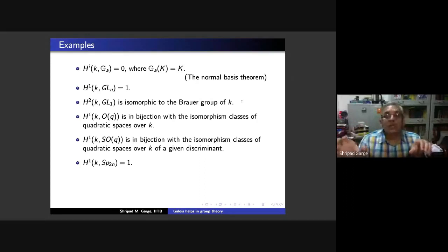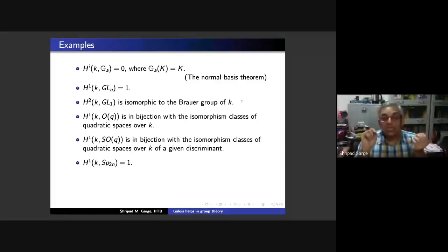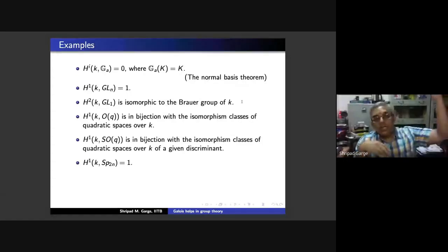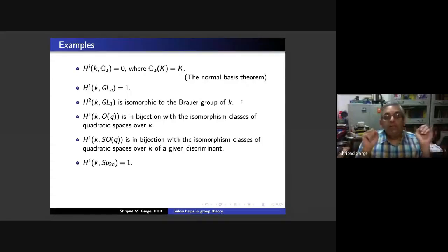If instead of O you look at SO, you get the isomorphism classes of non-degenerate quadratic spaces of a given dimension and any given discriminant. You fix the discriminant and look at quadratic spaces which are non-degenerate of fixed dimension; their isomorphism classes over small k are captured by H^1(k, SO_Q). Over the algebraic closure, any two such quadratic spaces of the same dimension are isomorphic, but over k they need not be — and the different isomorphism classes are captured by H^1(k, O_Q). Finally, H^1(k, Sp_{2n}) of the symplectic group is trivial.